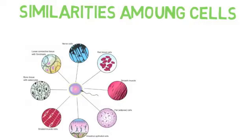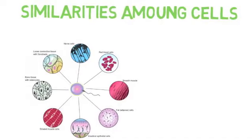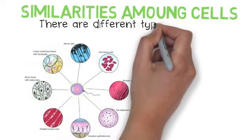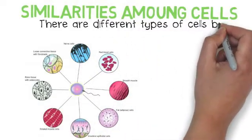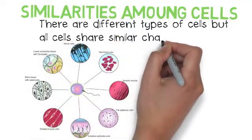Similarities among cells. We have all these different types of cells: red blood cells, nerve cells, muscle cells, heart cells. But they all have something in common. We even have animal and plant cells and bacteria cells. There are many different types of cells, but all cells share similar characteristics.